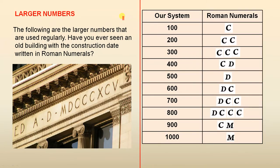Larger numbers. The following are the larger numbers that are used regularly. Have you ever seen an old building with the construction date written in Roman numerals? Now here's a perfect example. Look at that. Once you study what all these are, I reckon you'll be able to work out that date. So have a little go at that, and I'm sure your teachers will help you and you can work out when this building was constructed.